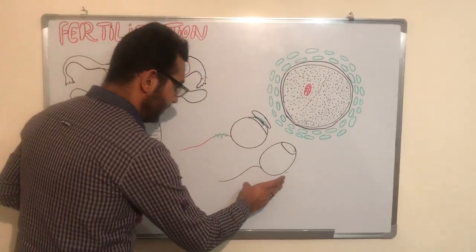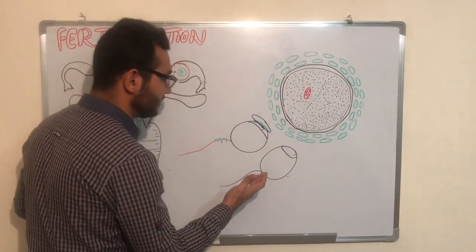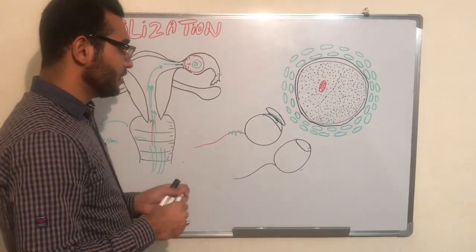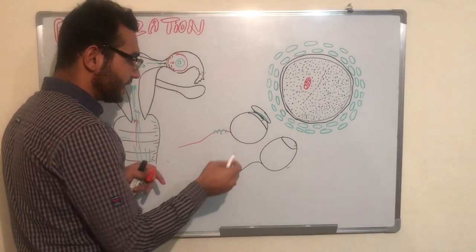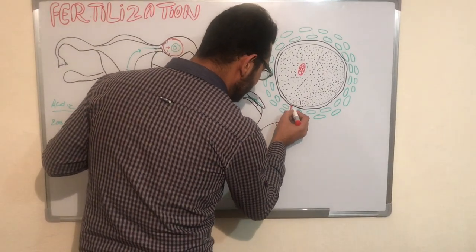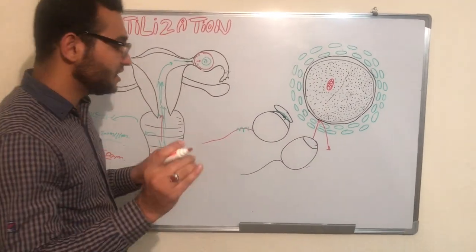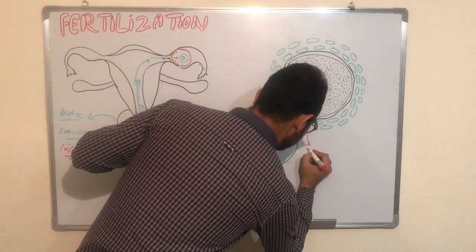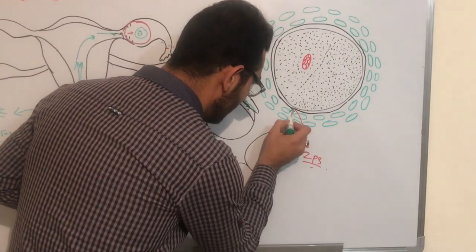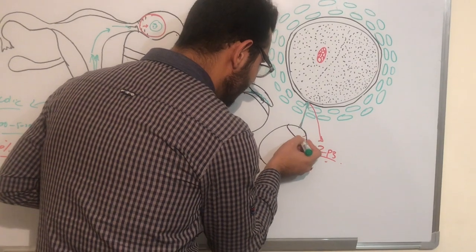Capacitation is the process in which glycoprotein and cholesterol are cleared from the head of the sperm, making the sperm more motile. When the capacitated sperm reaches the zona pellucida, it attaches via specific receptors named GP3.